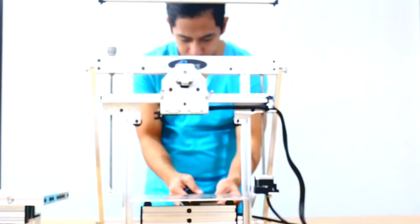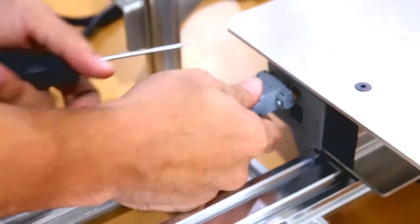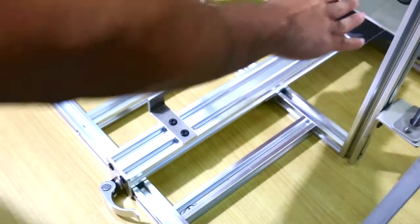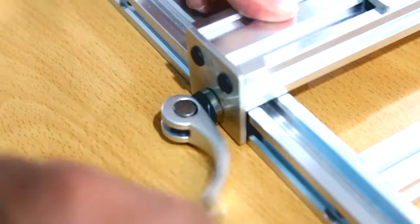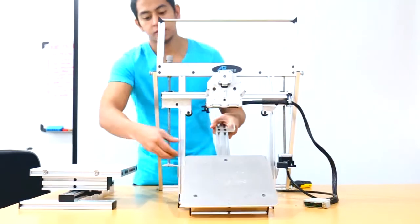Next, unscrew the DB connector located at the back of the Y assembly carriage. Then push the print plate forward so you can release the two camlock levers and detach the Y assembly from the base.